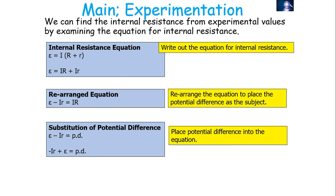What we can do is multiply I by both values, so EMF equals IR plus Ir. We can rearrange this to make IR — the terminal potential difference of the circuit — the subject. So, IR, or terminal potential difference, equals EMF minus Ir, or the lost volts.